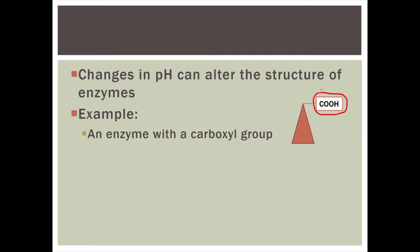Carboxyl groups have this H, and this H is highly susceptible to pH changes. If the pH is really high — very basic — there's a lot of base present. Because bases absorb hydrogen ions or protons, the carboxyl group will give up the H, and this structure will be different because without that H, it can't form hydrogen bonds with other parts of the enzyme and it could possibly deform.